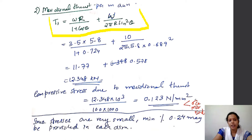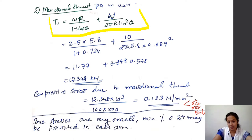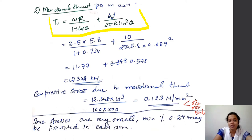The equation for meridional thrust is: T = w·R / (1 + cos θ) + W, where capital W is the lantern load and small w is the total UDL of 3.5 kN/m². This thrust divided by the area (100 mm thickness × 1000 mm width) gives a compressive stress of 0.123 newton per mm square.